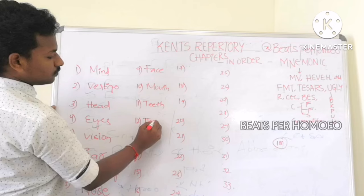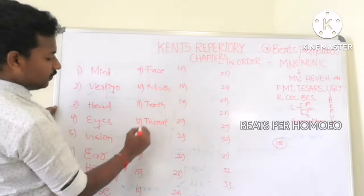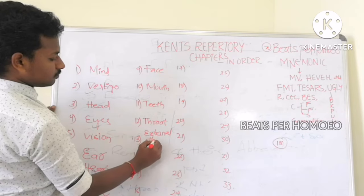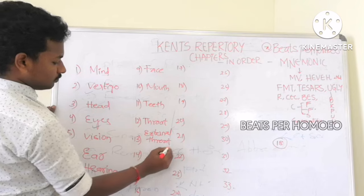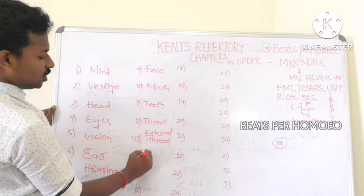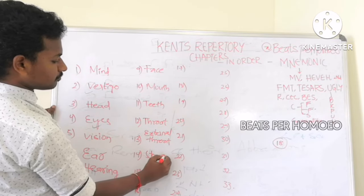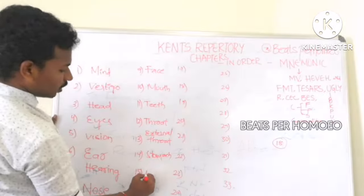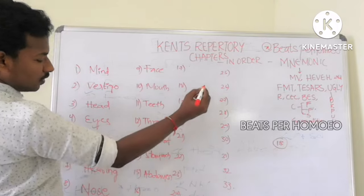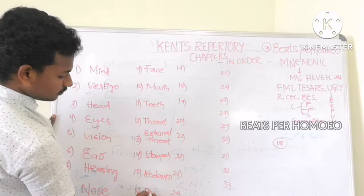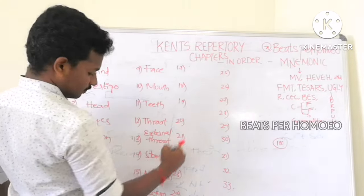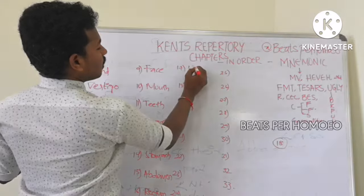T is for Throat, E is for External Throat, S is for Stomach, A is for Abdomen, and R is for Rectum. Then UGLY: U is for Urinary Organs.